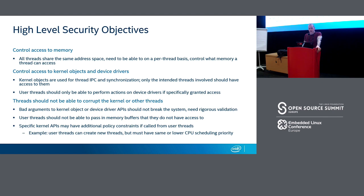For some kernel APIs we need additional policy constraints. For example, user threads can create new threads themselves, but any thread created by a user thread also has to be running in user mode, and it has to have the same or lower CPU scheduling priority.